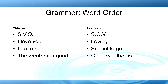So let's start from the grammar, beginning with the word order. Chinese, like I mentioned before, is almost the same as English — it's SVO: subject, verb, object. For example, 'I love you' in Chinese is also directly translated into English as 'I love you.' And 'I go to school' is 'I go to school.' The weather is good, the weather is good.